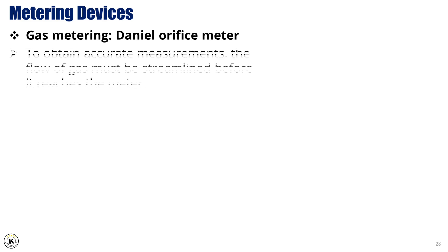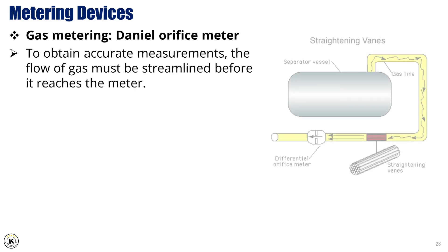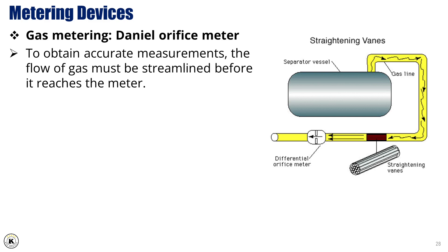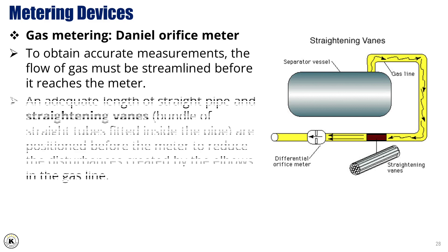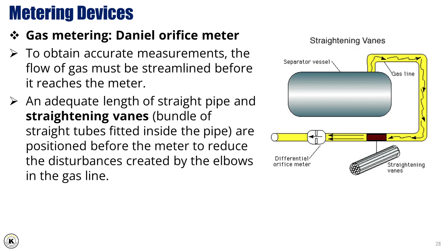To obtain accurate measurements, the flow of gas must be streamlined before it reaches the meter. An adequate length of straight pipe and straightening vanes — a bundle of straight tubes fitted inside the pipe — are positioned before the meter to reduce the disturbances created by the elbows in the gas line.